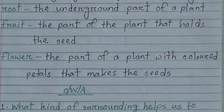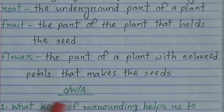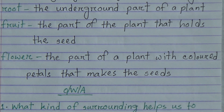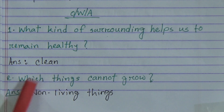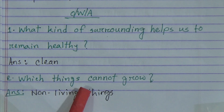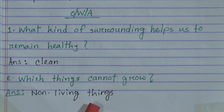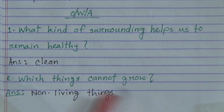Now, one word answer. Number one: What kind of surrounding helps us to remain healthy? Answer: clean. Number two: Which things cannot grow? Answer: non-living things.